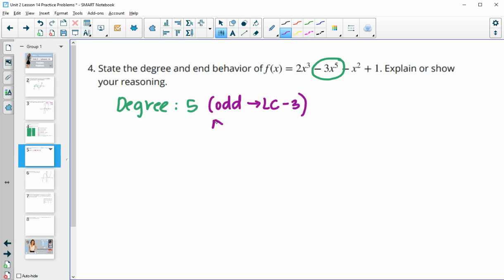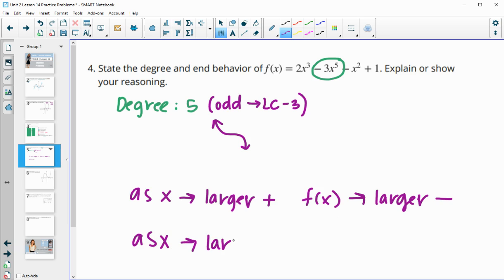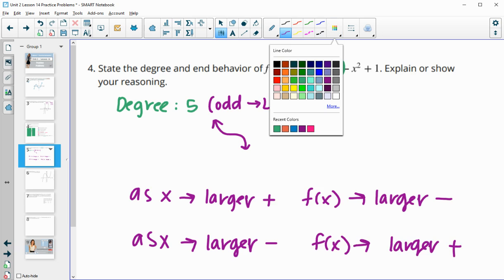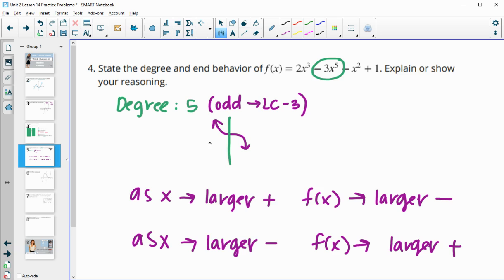As x approaches larger and larger positive numbers, f(x) approaches larger and larger negative numbers. When the leading coefficient is negative, they do opposite things. As x approaches larger and larger negative numbers, f(x) approaches larger and larger positive numbers. With a negative leading coefficient and odd degree, they do different things.